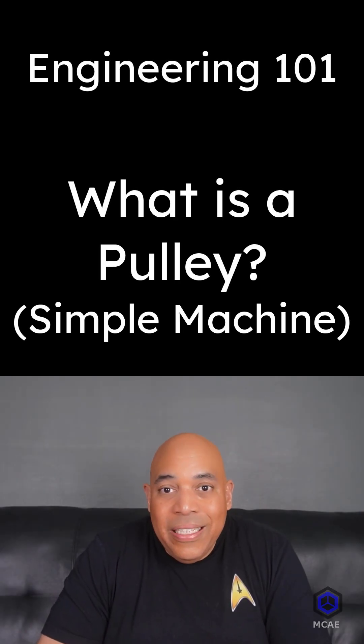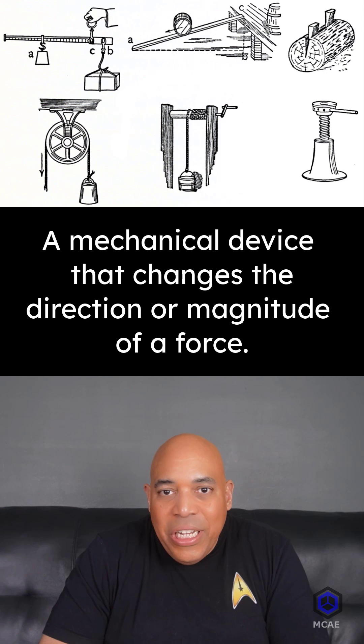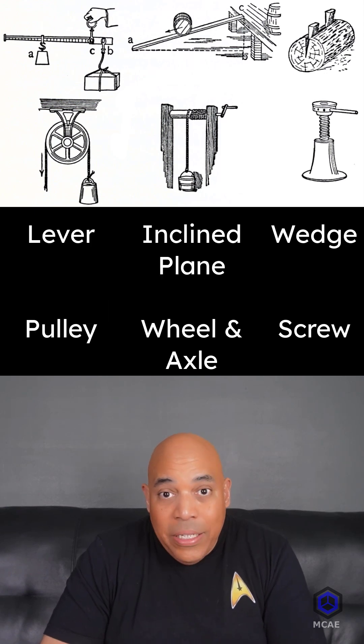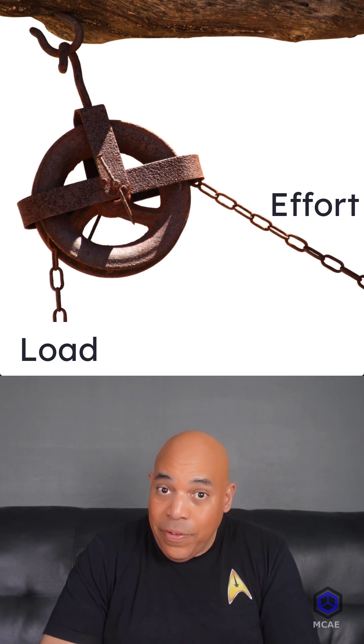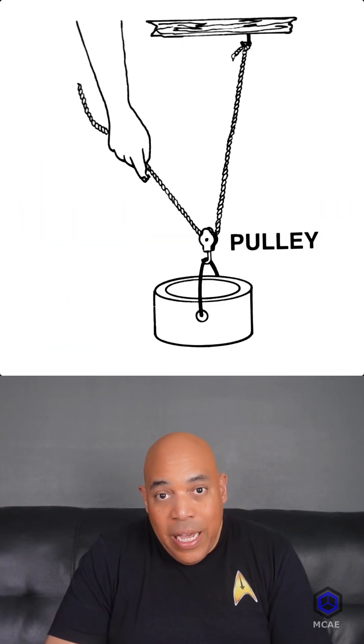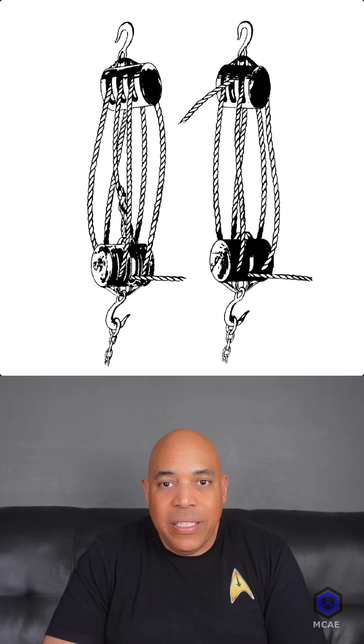A simple machine is a mechanical device that changes the direction or magnitude of a force. The pulley is a wheel with a rope or a belt. A pulley changes the direction of a force, or multiplies the effort, or does both at the same time.